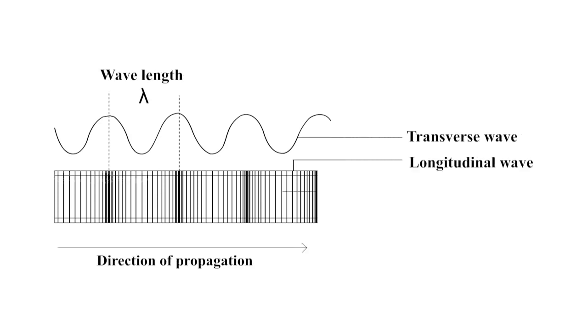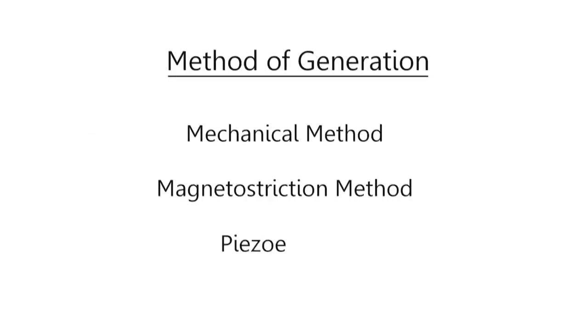During this vibration, momentum is transferred among molecules. This causes the wave to pass through the medium. Ultrasonics can be produced by different methods including mechanical method, magnetostriction method, piezoelectric, etc.